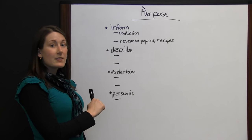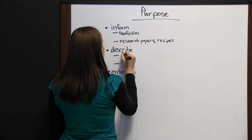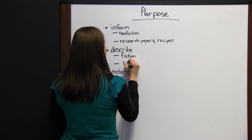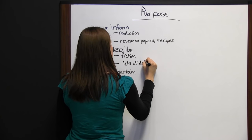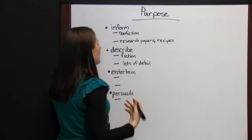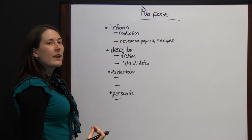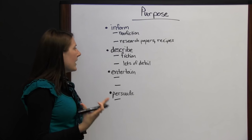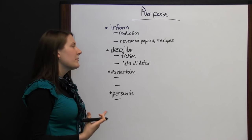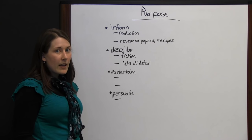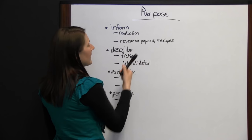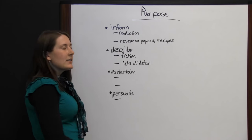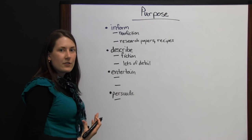If the author's purpose is to describe, it will probably be fiction with lots of details. A descriptive story or paper will elaborate on details and give as much description as possible. While an informational paper also has details, they're not the same kind of rich details you'd get in a descriptive fictional narrative.